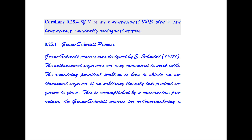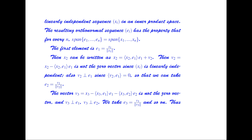Now we discuss the Gram-Schmidt process. The Gram-Schmidt process was developed in 1907. Orthonormal sequences are very convenient to work with, and the practical problem is how to obtain an orthonormal sequence from an arbitrary linearly independent sequence. This is accomplished by a constructive procedure — the Gram-Schmidt process — for orthonormalizing a linearly independent sequence in an inner product space, such that for every n, the span of e1, e2, …, en equals the span of x1, x2, …, xn.